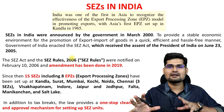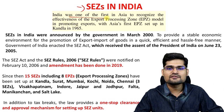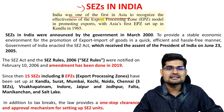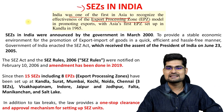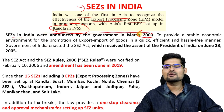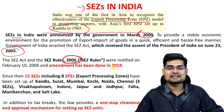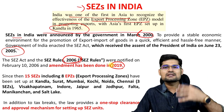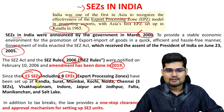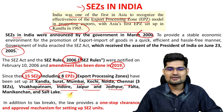In India, it's very interesting to note that India was one of the first in Asia to recognize the effectiveness of export processing zones. Kandla started in 1965. SEZs in India were announced in 2000, finalized in 2005, rules set up in 2006, and a recent amendment was done in 2019. We have 15 SEZs including 8 export processing zones, with examples at Kandla, Surat, Mumbai, Kochi, Noida, Chennai, Vishakhapatnam, Indore, Jaipur, and Jodhpur, among others.